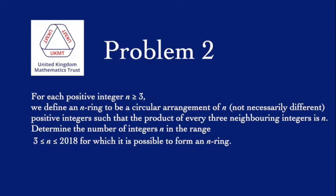Problem 2. For each positive integer n greater than or equal to 3, we define an n-ring to be a circular arrangement of n, not necessarily different, positive integers, such that the product of every three neighbouring integers is n. Determine the number of integers n in the range from 3 to 2018 for which it is possible to form an n-ring.